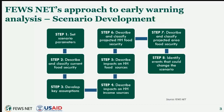Looking at FEWS NET's approach to early warning analysis, we use a method called scenario development to produce our projections of acute food insecurity up to 8 months in the future. We start by selecting a population group and analyzing how their livelihood system allows them to produce or purchase their minimum food needs, then develop evidence-based assumptions about how ongoing or expected shocks will affect their ability to do that. This analysis examines the extent to which household food and income will or won't cover their food needs over the coming months, and is then translated into our food security projections.